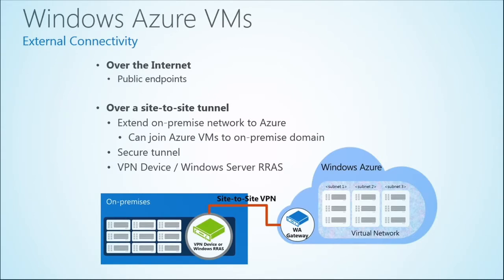Once you have these virtual machines running in Windows Azure, you can connect to them in two ways. The first is over the internet using public endpoints — the endpoint concept is similar to ports, where you open the port and connect. In Windows Azure, you create endpoints that allow connections on a specific port. If you have clients in your data center, that's one way you can connect to them.